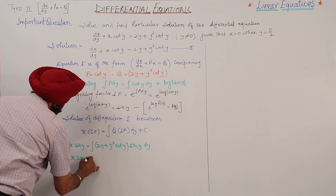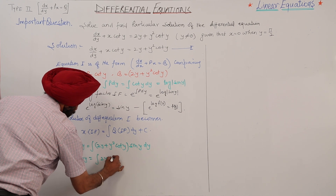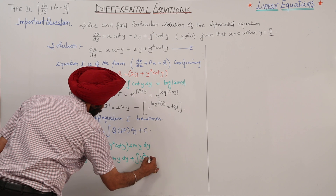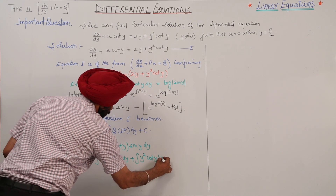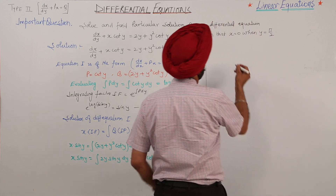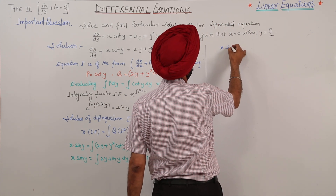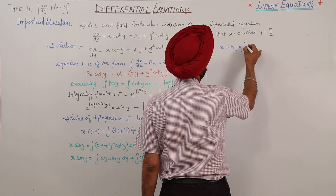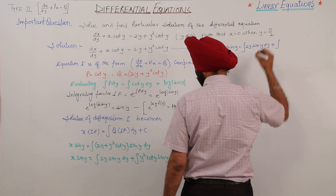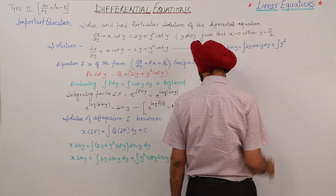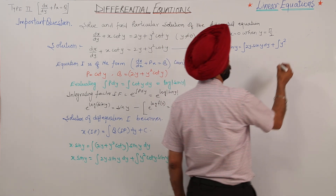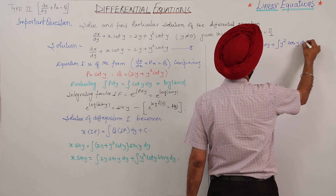x sin y equals the integration of 2y sin y dy plus the integration of y squared cot y times sin y dy. Now cot y is cos y over sin y, so the second integral becomes the integration of y squared cos y dy.